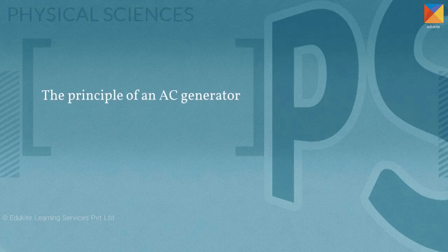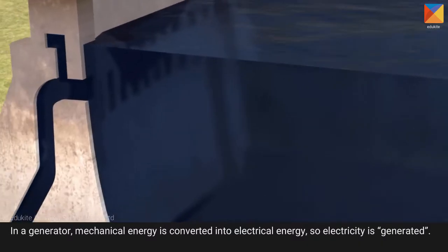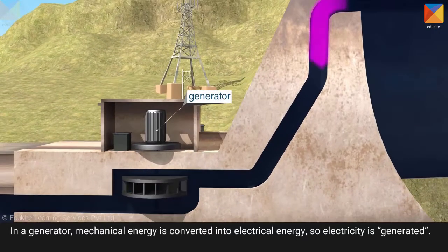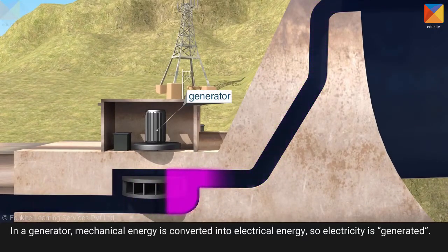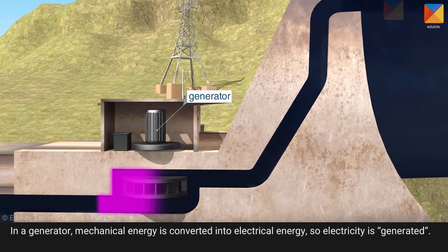The Principle of an AC Generator. In a generator, mechanical energy is converted into electrical energy, so electricity is generated.